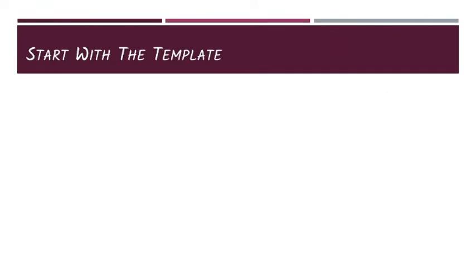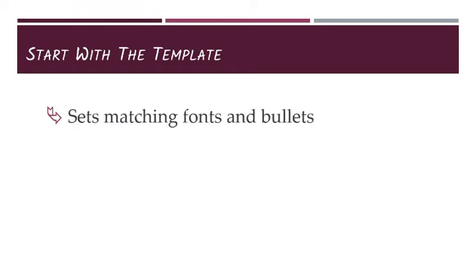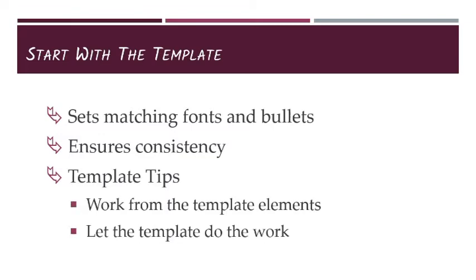Our first and most important visual element is our template. Start by choosing a template that reflects the appearance and mood for your presentation. The template gives you more than a consistent set of fonts and bullets — it gives you matching colors, complementary designs for different slide layouts, and a consistent appearance overall. Always use your template elements. When you click in a title field, if you have to apply another template later, your software will know that's a title and format it accordingly. If you just click somewhere random on the screen and start typing, it doesn't know that and you'll have to do all your formatting manually.